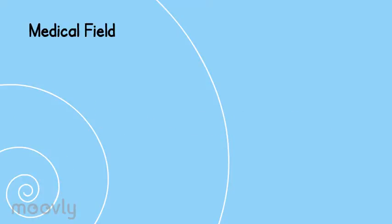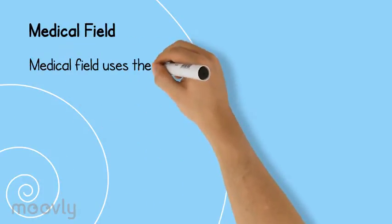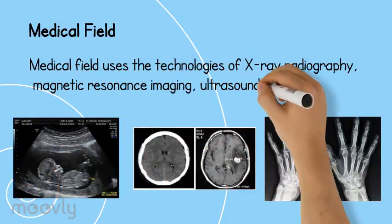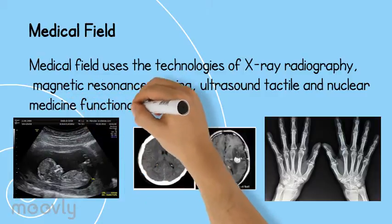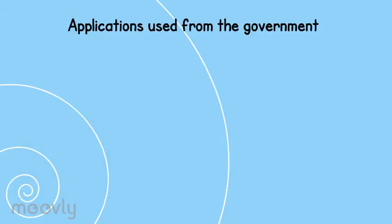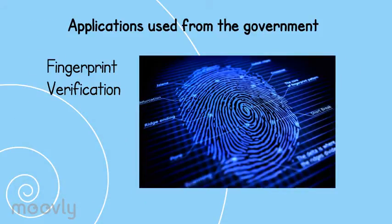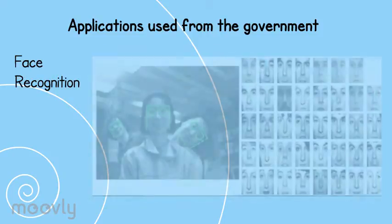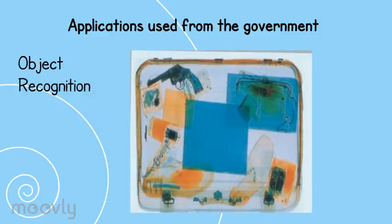The first type is medical field. Medical field uses the technologies of x-ray, MRI, ultrasound and nuclear medicine functional imaging techniques. Some other types that are used from the government are fingerprint verification, face recognition, traffic monitoring and object recognition.